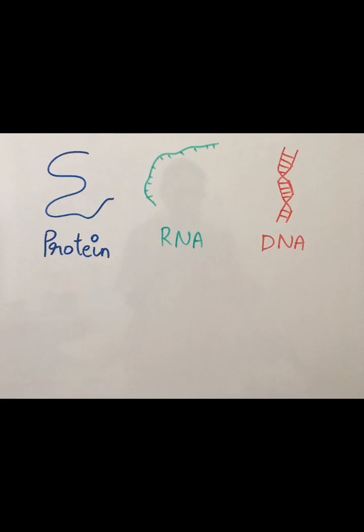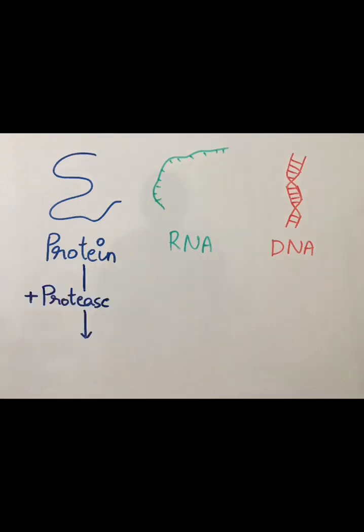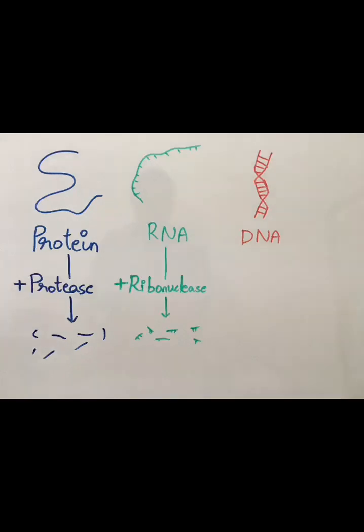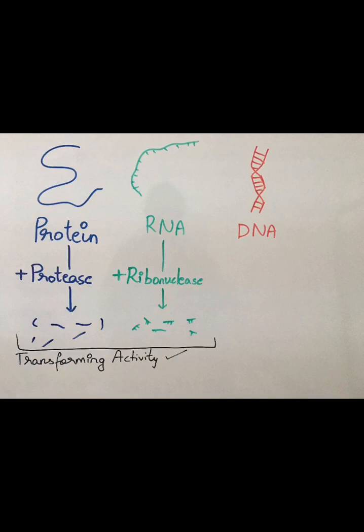To confirm which one of these is the actual genetic material, the following experiment was conducted. They added enzymes that would degrade each one in separate vials and checked for transforming activity. Addition of protease degraded the protein, and addition of ribonuclease degraded the RNA, both of which showed no effect on the transforming activity.